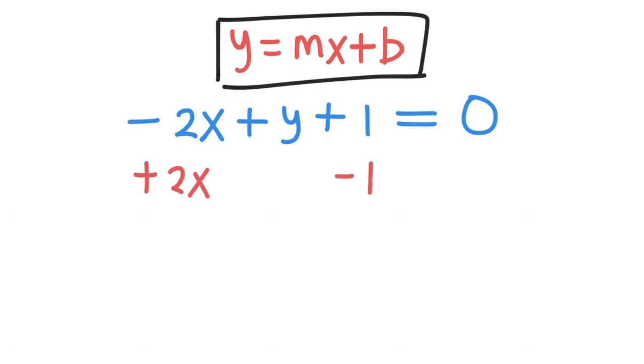We can add 2x and subtract 1 on both sides, so this equation becomes y equals 2x minus 1.